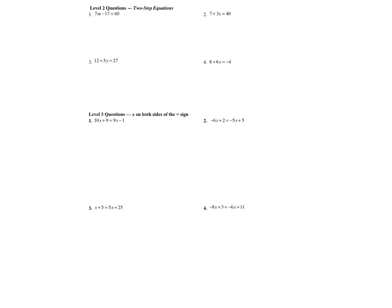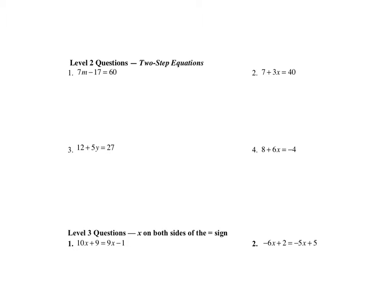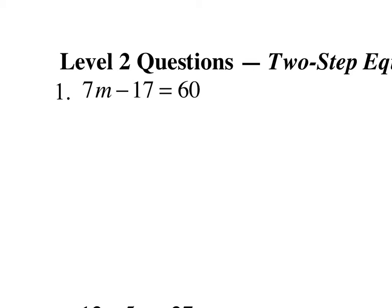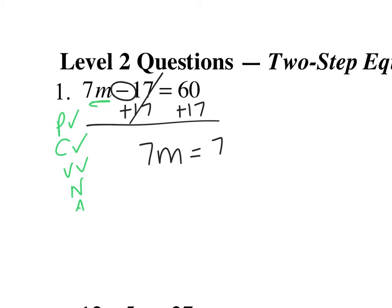Let's go on to two-step equations. Here's what we're going to do again — PCVNA. Can I get rid of my parentheses? There are no parentheses. Can I combine my 7m and my 17? No. Are all of my variables on the left-hand side? Yes, my 7m is. Are my numbers on the right-hand side? No — not all of them. I have a minus 17. How do I get rid of a minus 17? I add 17 to both sides. So I get 7m equals 77. Now all my numbers are on the right-hand side. Final step: get rid of your number attached to your m by dividing. I divide by 7 on both sides, so I get m equals 11.